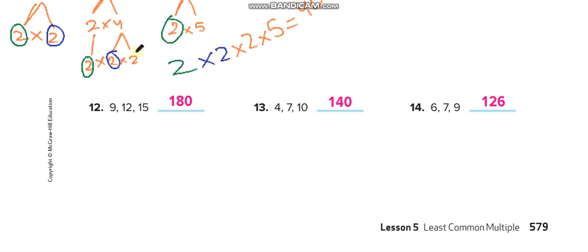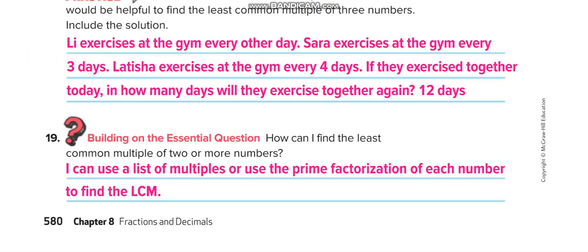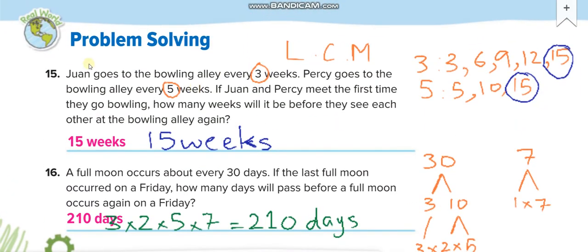If you missed something, you can rewind and watch again. Here's a real-life example: John goes to the bowling alley every 3 weeks and his friend goes every 5 weeks. If they start together, when will they meet again? Find the LCM of 3 and 5 — it's 15 — so they'll meet again at week 15.